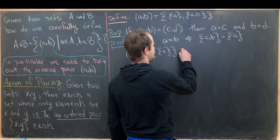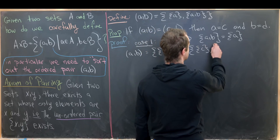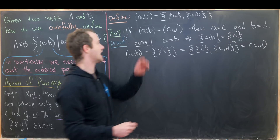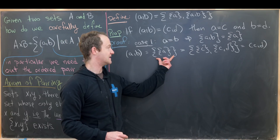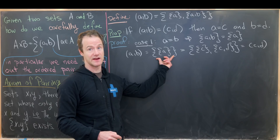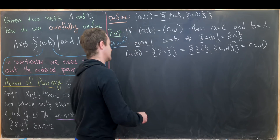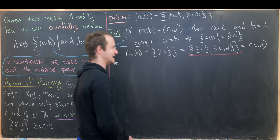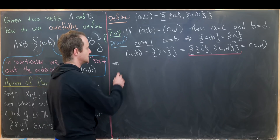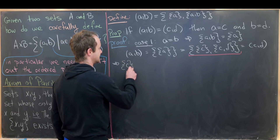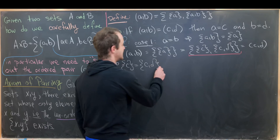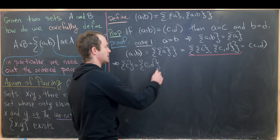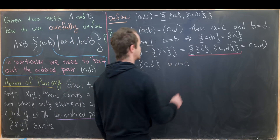That must also be equal to the set containing {c} and {c, d}, because that equals (c, d), and we're assuming (a, b) equals (c, d). Since the left side is a singleton, this set must also be a singleton. So the set {c} must equal the set {c, d}, because otherwise it would be a set with two elements. But that means d must equal c.